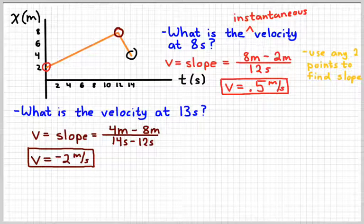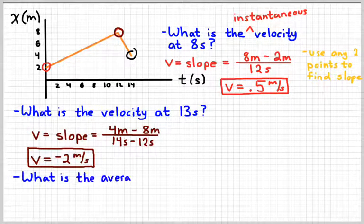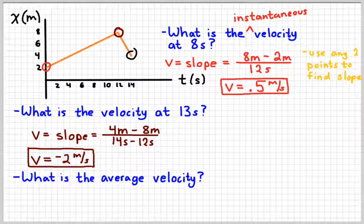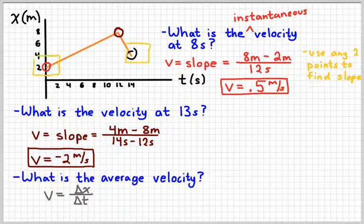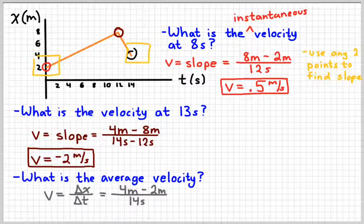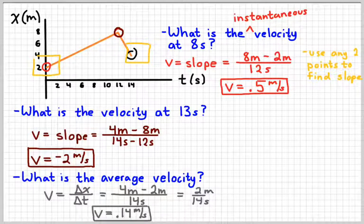So, the instantaneous velocity at 8 seconds is different than the instantaneous velocity at 13 seconds. At 8 seconds it's moving forwards; at 13 seconds it's moving backwards. Now, if we wanted to know the average velocity — just the first and last point — we would do displacement over time, and using the first and last point we'd get something like 0.14 meters per second. All three of those numbers are meaningful; it just depends on the context of what you want to know.